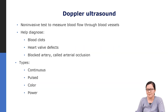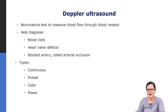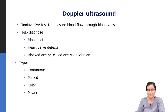Doppler ultrasound is a non-invasive test to measure blood flow through blood vessels. It can help us diagnose blood clots, heart valve defects, a blocked artery called an arterial occlusion, as well as arterial stenosis. There are several types of Doppler: continuous Doppler, pulse wave Doppler, color Doppler, and power Doppler.